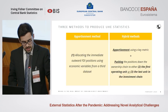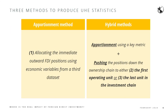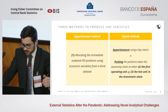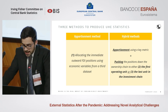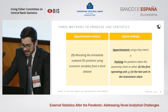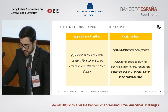Building upon the classification of our American colleagues, we tested three methods. One apportionment method allocates the immediate outward FDI positions using economic variables from a third data set — in our case, the OFATS (outward foreign affiliate statistics). We also used two hybrid methods made possible by the EGR (Eurogroups register), combining aspects from both apportionment and push-down methods: pushing the immediate position down the ownership chain to either the first operating unit or the last unit in the investment chain, then doing apportionment using a variable such as employment.